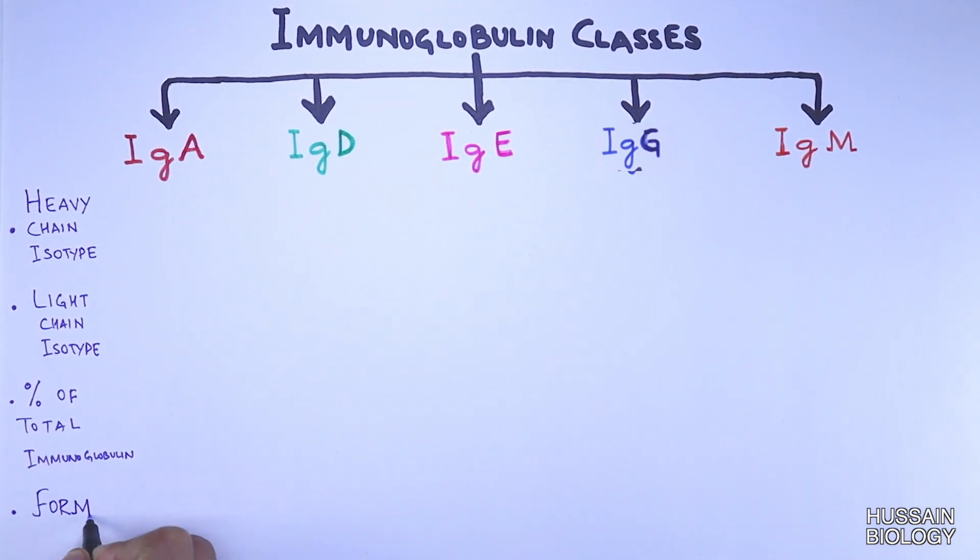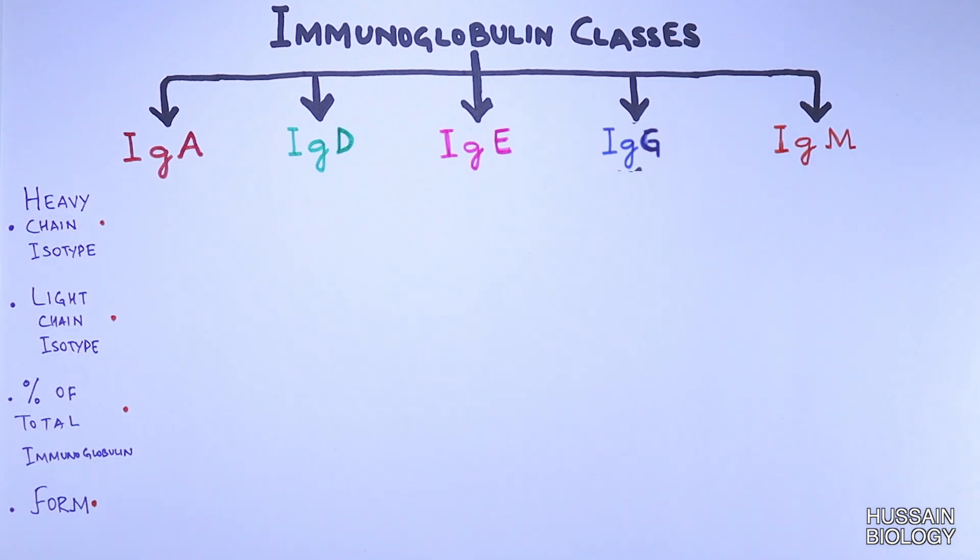and the form in which the immunoglobulin is present, whether it's monomer, dimer, trimer, or so on.